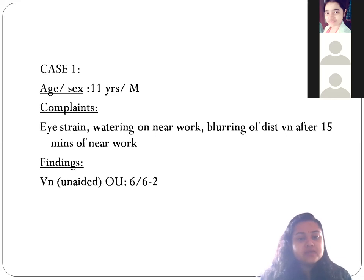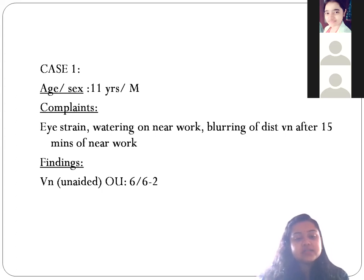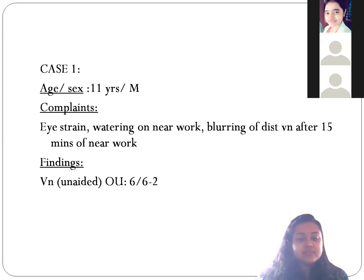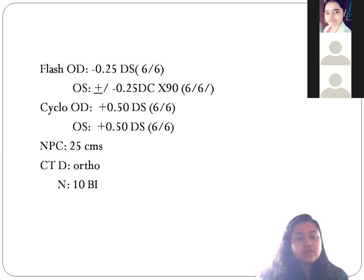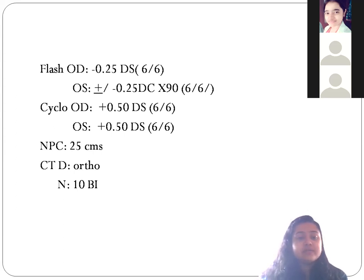If you are checking the distance vision, you have found 6/6 minus 2 for both right eye and left eye. Retinoscopy findings are minus 0.25 diopter for right eye.